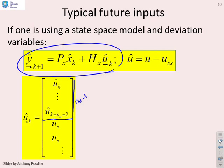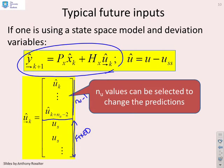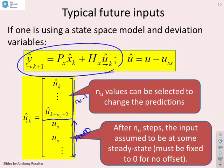So, in other words, this US value is also a degree of freedom, so I've still got NU degrees of freedom. So, we've got NU values, which can be selected to change the prediction. So, NU different values for this deviation variable, and in the long term, we assume that the deviation becomes fixed. Now, for many algorithms, we assume that the deviation actually goes to zero in the long term, but we're not going to get into that subtlety yet. We're just giving a general structure here.